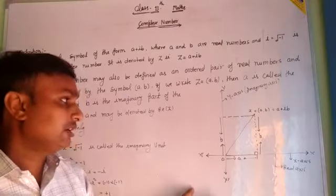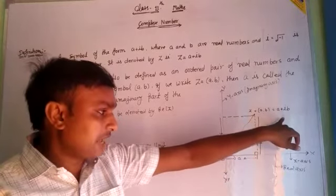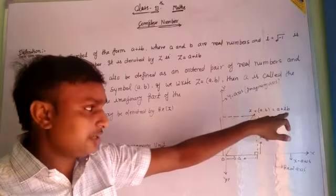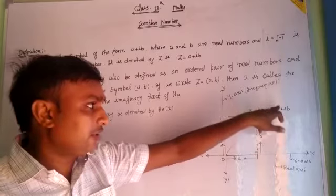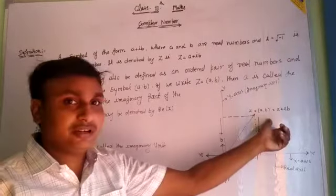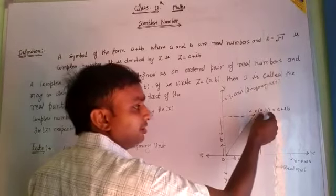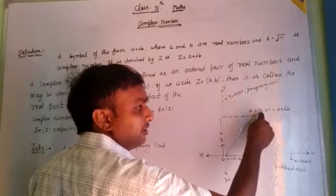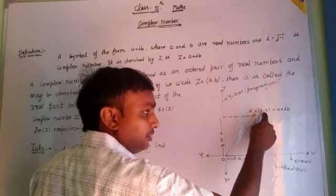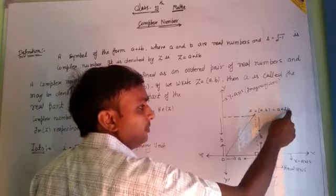Since every point in the Argand plane, that is the xy-plane, is represented as an ordered pair — every point in the first, second, third, and fourth quadrants is always an ordered pair. Suppose a point z represents an ordered pair (a, b); so that ordered pair is also a complex number, equal to a plus ib.